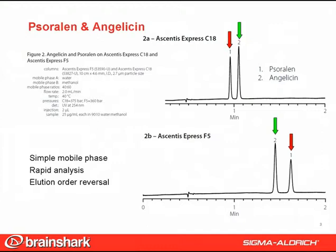So we ended up using two test mixes. This figure shows the major compounds, psoralen and angelicin. Note the simple water-methanol mobile phase, the rapid analysis under two minutes, and the fact that the F5 and C18 gave elution order reversal.